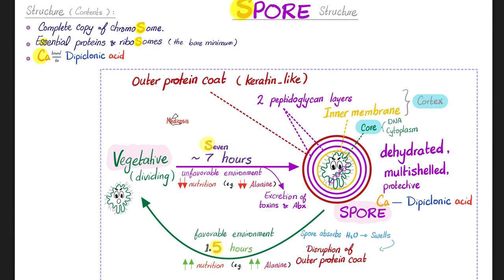From the outside to the inside: first we have an outer protein coat, which is like keratin, followed by two peptidoglycan layers, followed by the inner membrane. These two layers are called the cortex because they are on the outside. The bacteria is on the inside, made of bacterial DNA and bacterial cytoplasm — this is called the core.